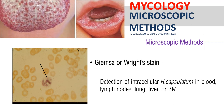Next is Giemsa or Wright stain. You are familiar with this from hematology. In mycology, Giemsa or Wright stain is used for the detection of intracellular Histoplasma capsulatum in blood, lymph nodes, lungs, liver, or bone marrow.